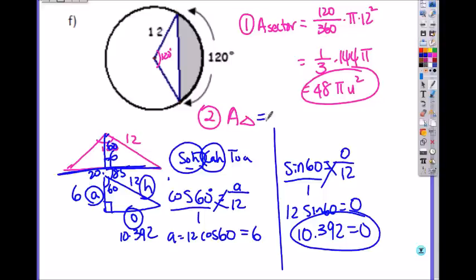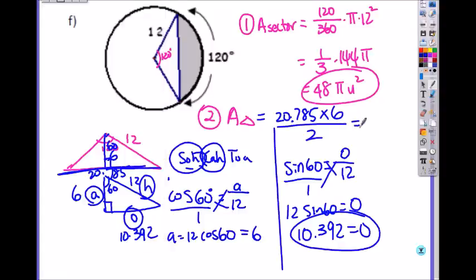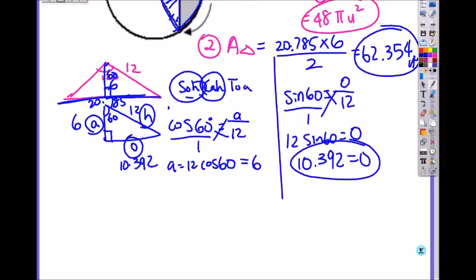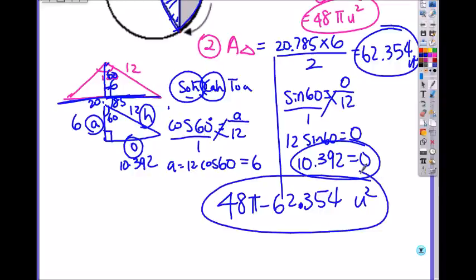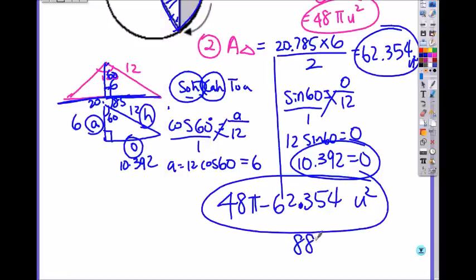Now you can find the area of the triangle, which is base, 20.785, times the height, 6, divided by 2. So that times 6 divided by 2, you get 62.354 units squared. So are we done? No. We just found the area of this triangle. So what do we do? Now you do the whole thing - the whole sector minus the triangle, which is 48 pi. So the area of the sector was 48 pi minus 62.354. Sometimes they accept your answer in this form, or just round it to all decimal. 48 pi minus 62.354 equals to 88.442 units squared.